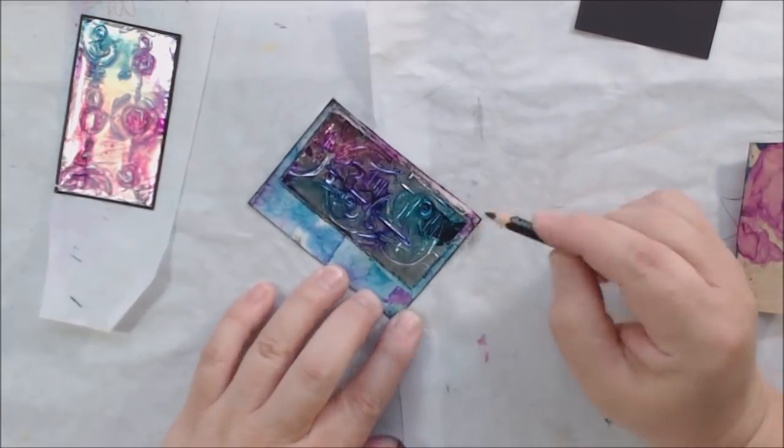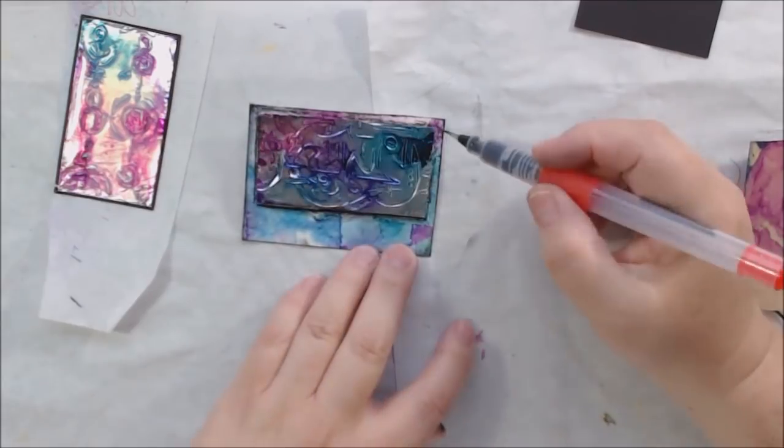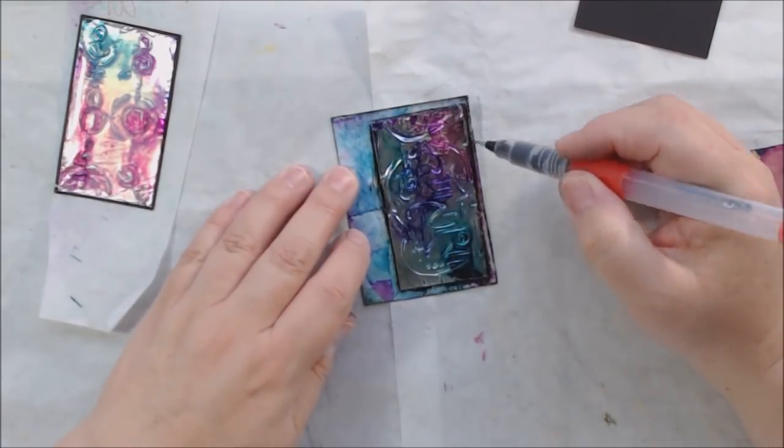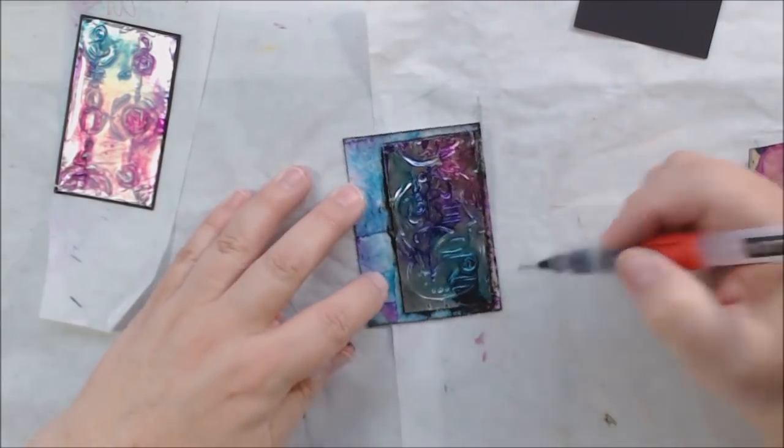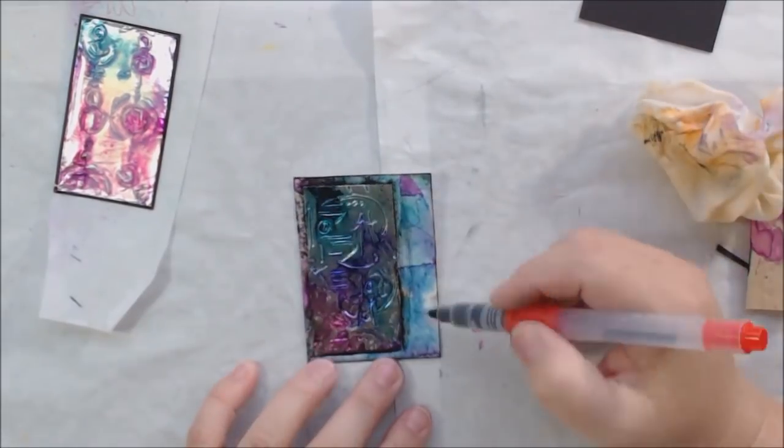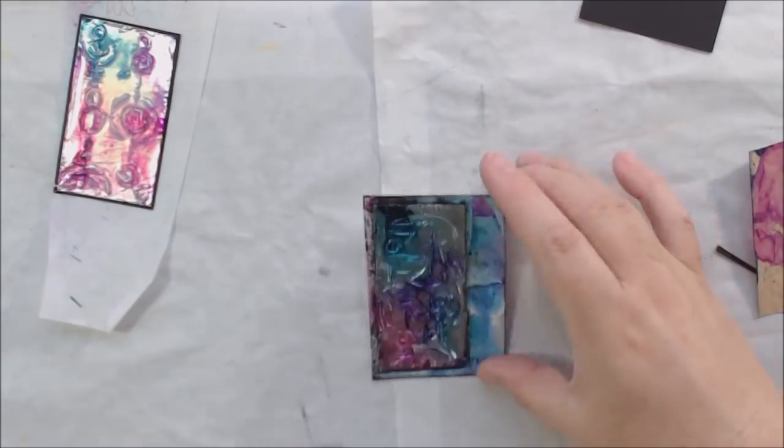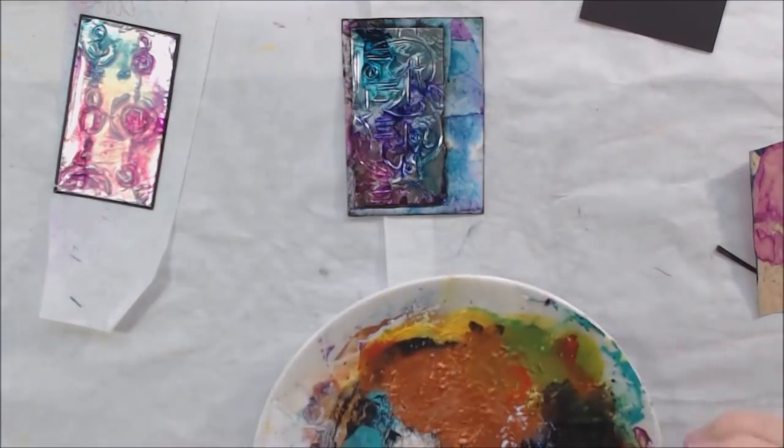I collaged with the Liquitex Fluid Matte Medium that deli paper onto my watercolor ATC. Then I trimmed down my piece a little bit, put Memento black ink around it just like I did around the card, and peeled it off, stuck it onto the card. So now I have my alcohol ink piece over some alcohol ink background, because it's alcohol ink day today.